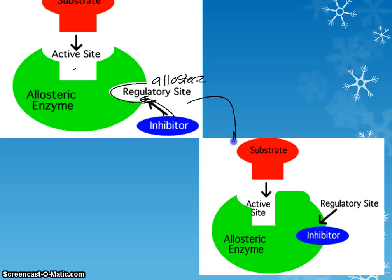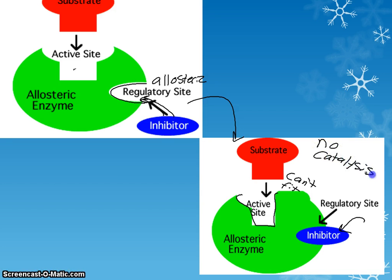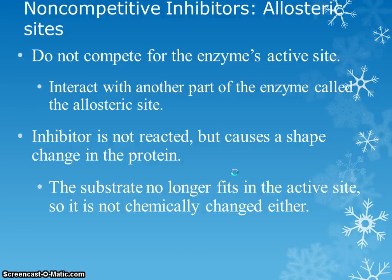Once the non-competitive inhibitor sits in the allosteric site, the active site no longer has the same shape. The substrate can't fit anymore — it's the wrong shape — so you've shut the enzyme down. No catalysis can happen because the substrate doesn't fit into the enzyme. You've shut it down by using a backdoor: instead of competing for the active site, it takes up the allosteric site, changes the whole shape of the enzyme, and shuts it down that way.